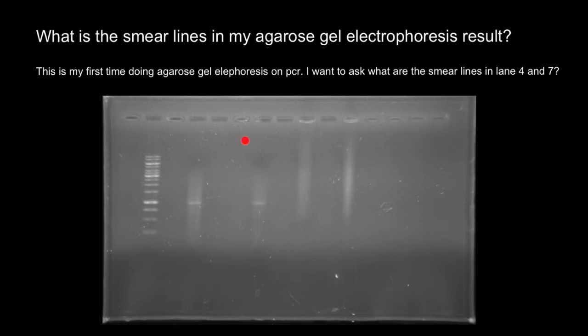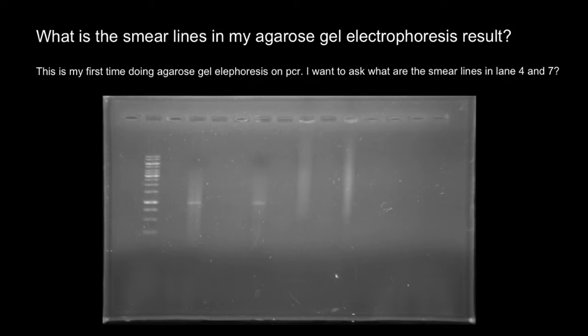Sometimes when your sample is not properly digested, you may experience a smear line. Contaminants or hairpin structures, caused as a result of homology, can also give a smear. It is advisable to rerun your sample and compare the outcome.